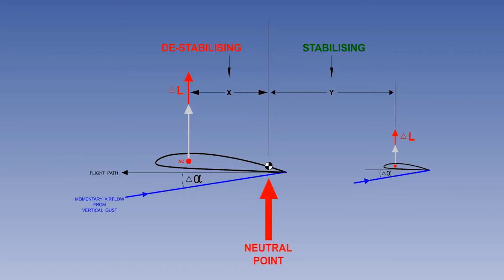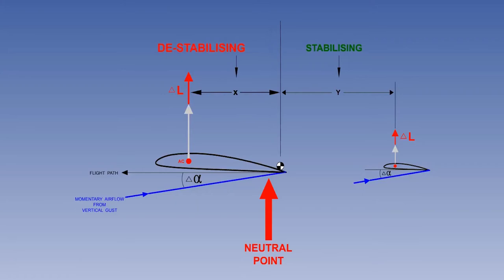The CG position that would give the aircraft neutral longitudinal static stability is called the neutral point. Operationally, you would never fly an aircraft with the CG on the neutral point. The aircraft must always be flown with a margin of safety. If the CG were to move aft of the neutral point, the aircraft would have negative longitudinal static stability, and when hit by a gust, would continue to displace from equilibrium, which is obviously not acceptable.